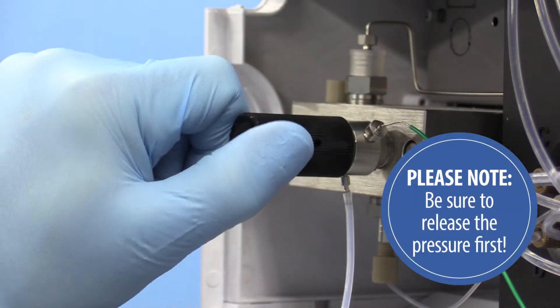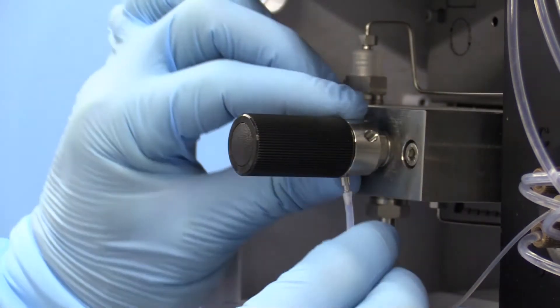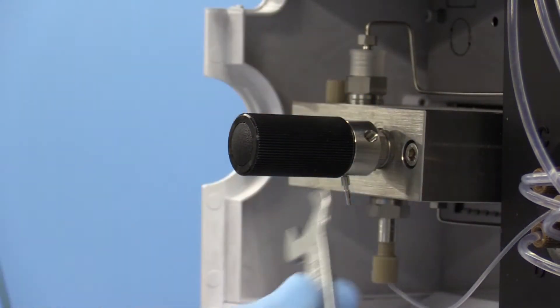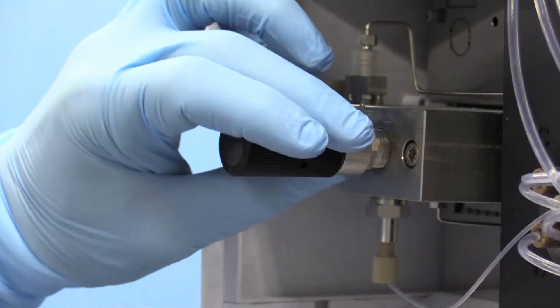First, open the purge valve to release the pressure, then remove the outlet capillary and drain lines. Next, unscrew the valve with the 14mm flat wrench provided in the pump accessory kit.